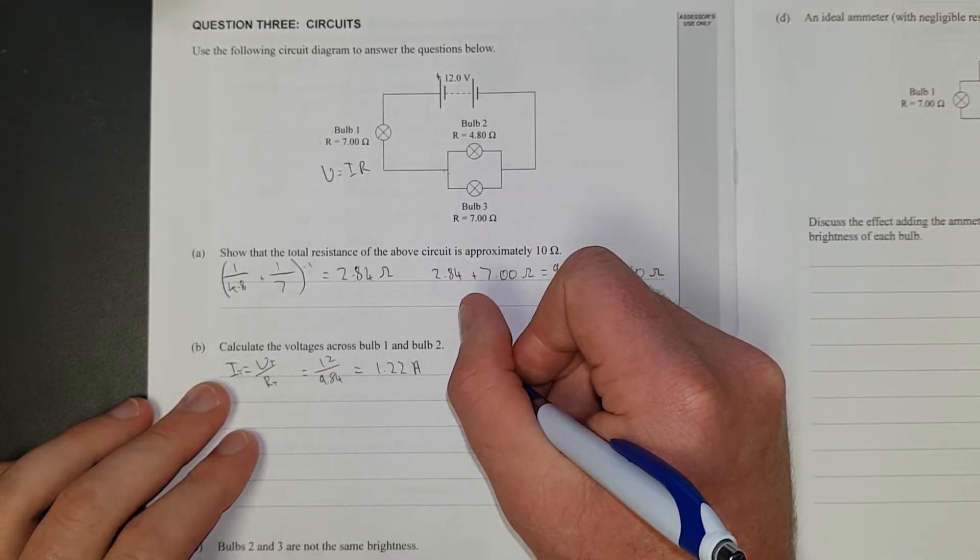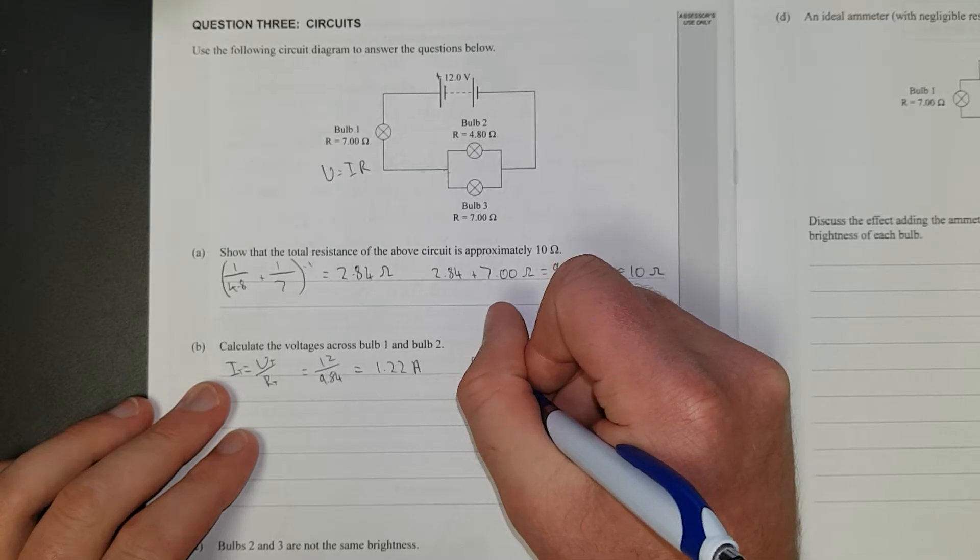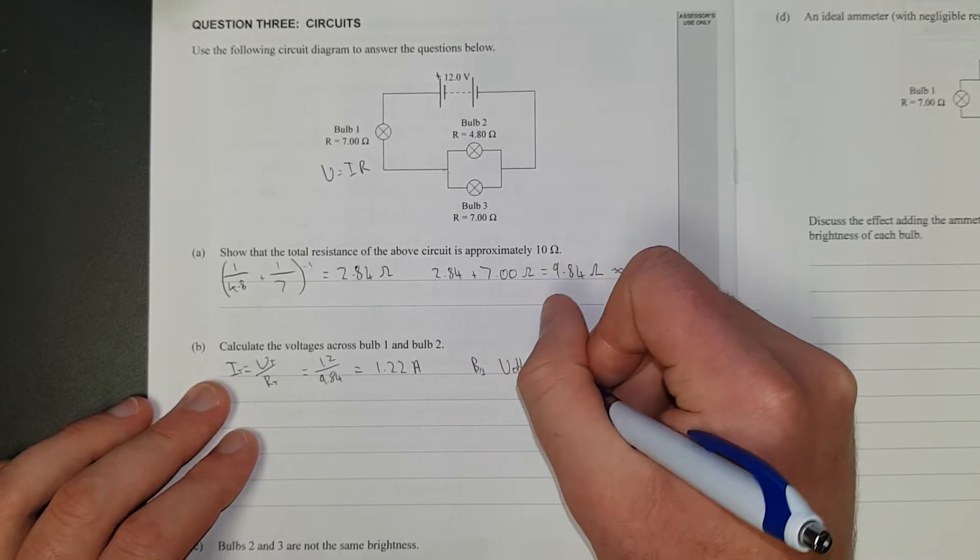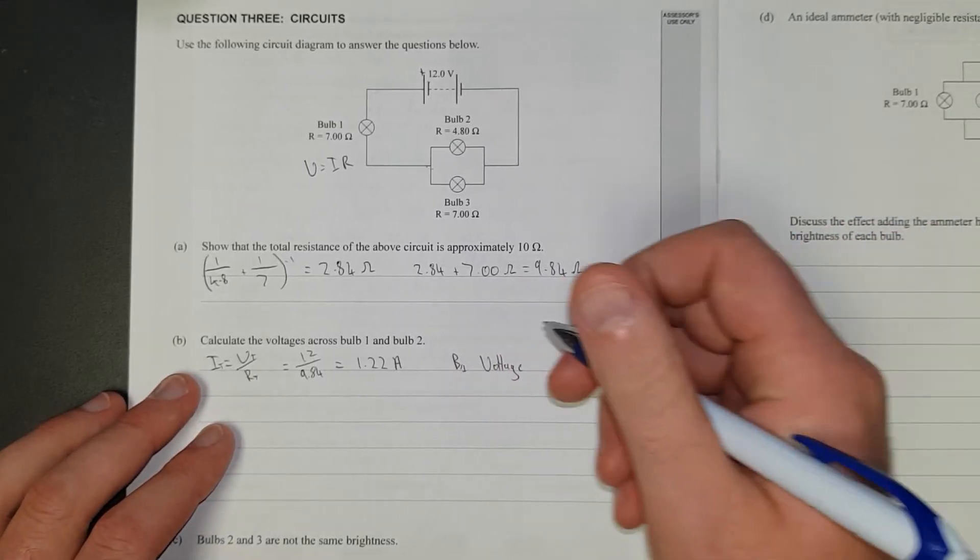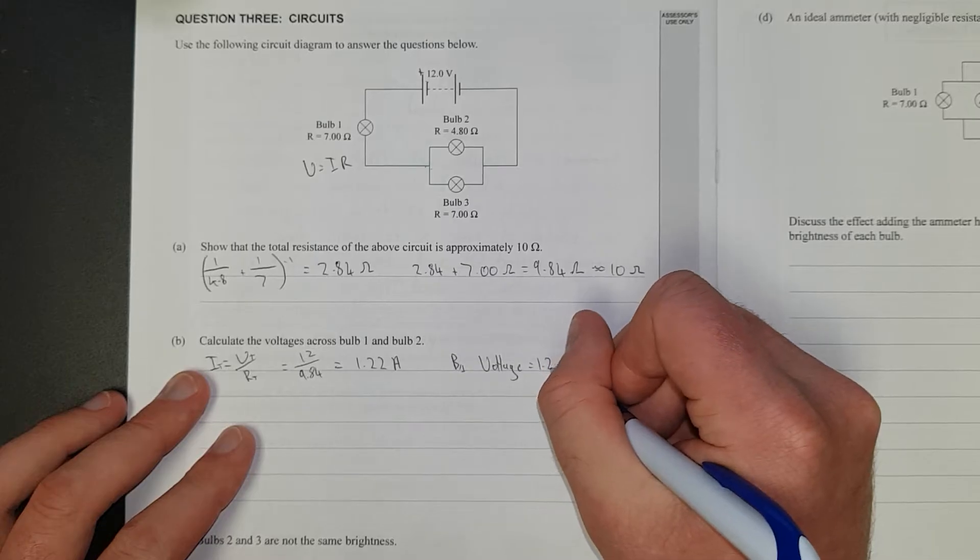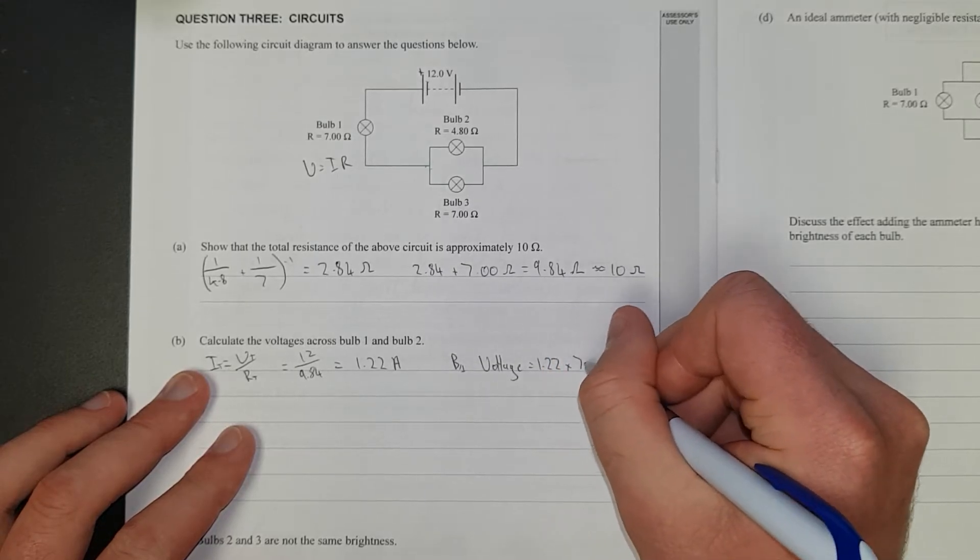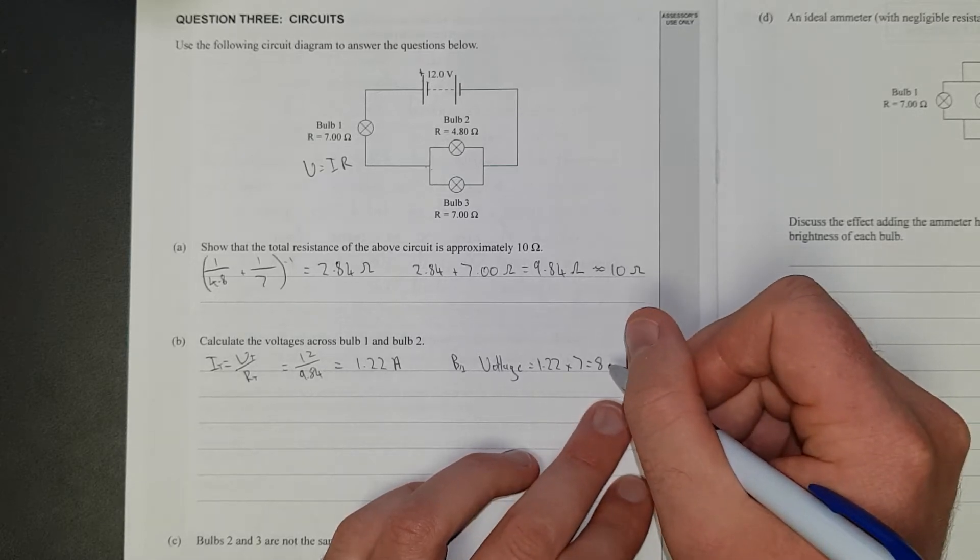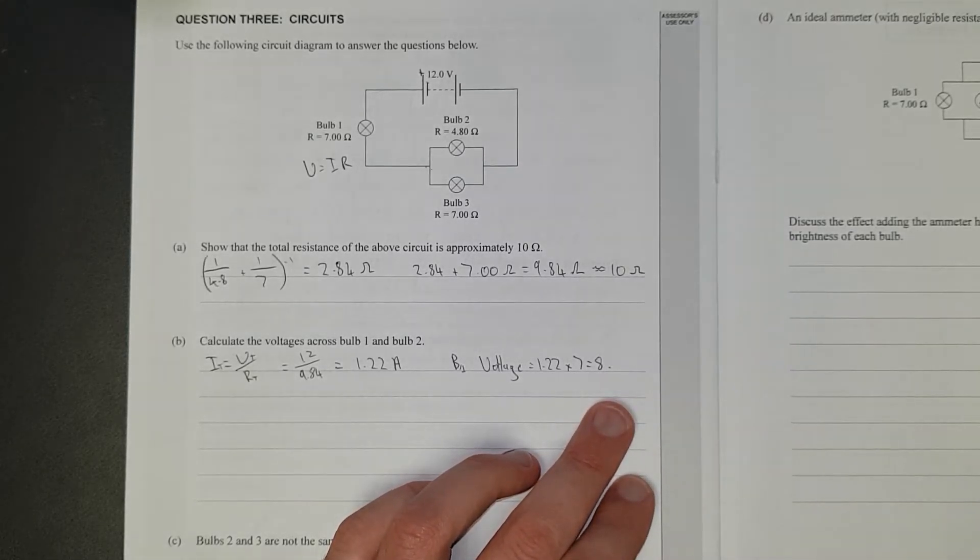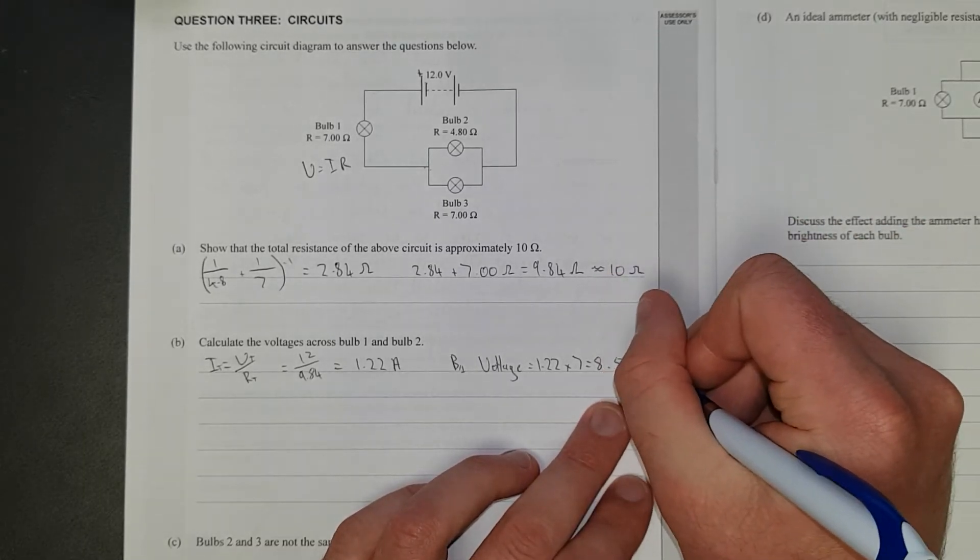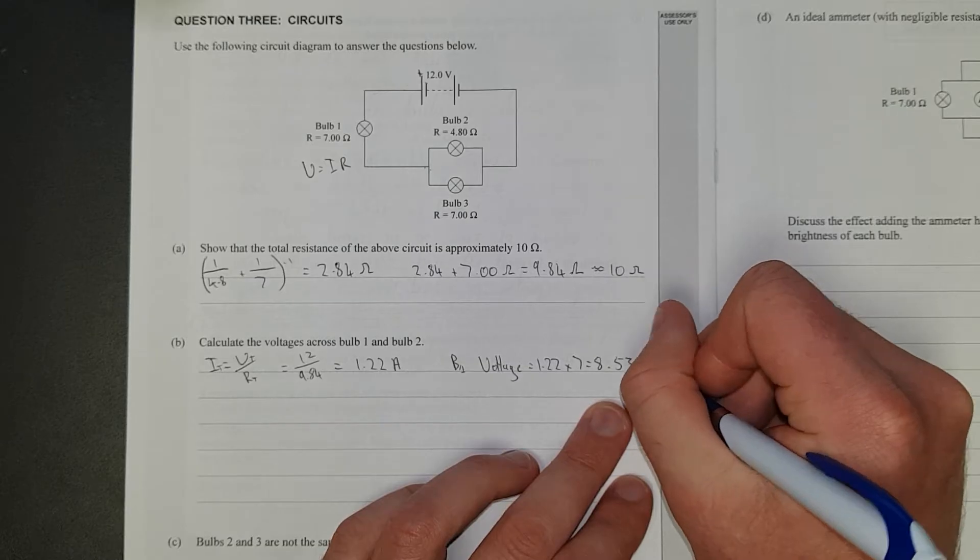So bulb 1 voltage, V1 voltage, there we go, voltage, is going to be equal to IR. So 1.22 times 7, which gives me 8.5. Was it 5? Was I right there? I hope it is. I have to calculate this out. 8.53 volts.